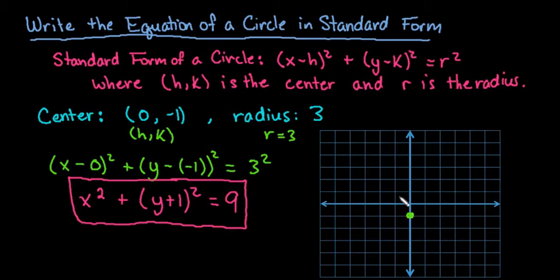And from our center we would just use our radius and go out 3 in each direction. So I would go out 3 to the right, I would go up 1, 2, 3, I would go to the left 1, 2, 3, and I would go down 1, 2, 3.